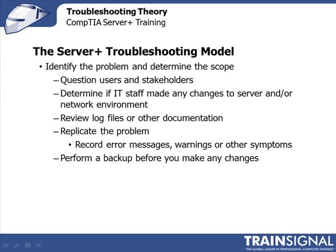The first step in the CompTIA Server Plus Troubleshooting Model is to identify the problem and determine the scope. There are several ways to do this, and you begin by questioning your users and stakeholders. You'll first want to understand your customer or your user's environment, including where they're located, what platform they're using, or operating system. This will hopefully give you a clearer picture of what the issue is.